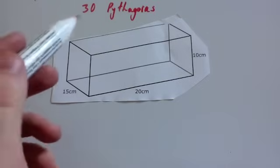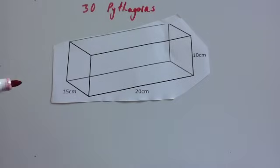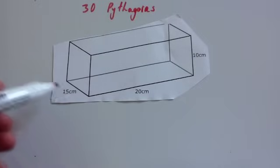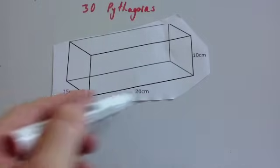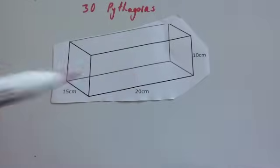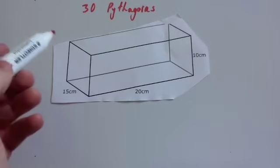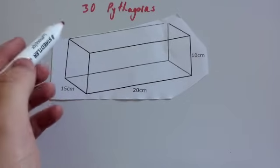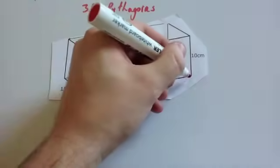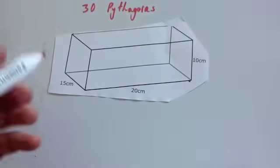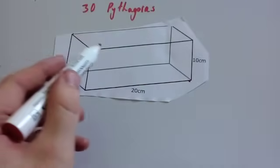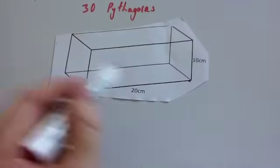We're going to look at 3D Pythagoras, or Pythagoras's theorem with 3D shapes. Here I've got a cuboid. The cuboid has a width of 15 centimetres, a length of 20 centimetres, and a height of 10 centimetres. The question wants us to find the length of the diagonal from the top left-hand corner to the bottom right-hand corner — going from one corner to the other side through the shape.